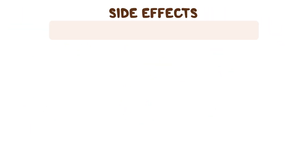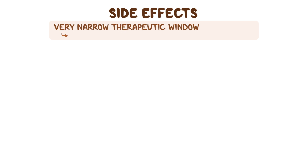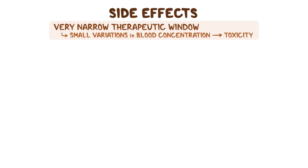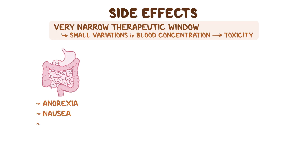A major drawback is that digoxin has a very narrow therapeutic window, which means that small variations in its blood concentration can easily cause toxicity. Some common side effects of digoxin that can indicate toxicity include gastrointestinal disturbances, such as anorexia, nausea, vomiting, and, rarely, diarrhea.